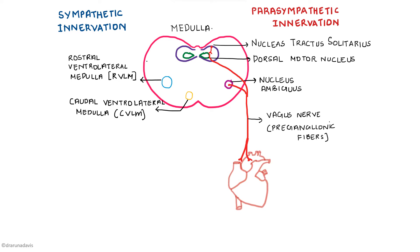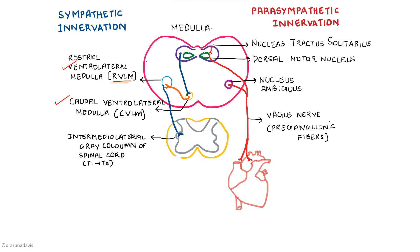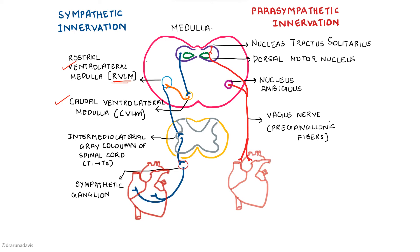For sympathetic control, from the nucleus tractus solitarius there are nerve fibers to the CVLM, and from there GABAergic neurons send impulses to the RVLM. The RVLM is a tonically active area that sends impulses down via the intermediolateral gray column of the spinal cord, and from there via sympathetic ganglia to the heart, causing an increase in heart rate.